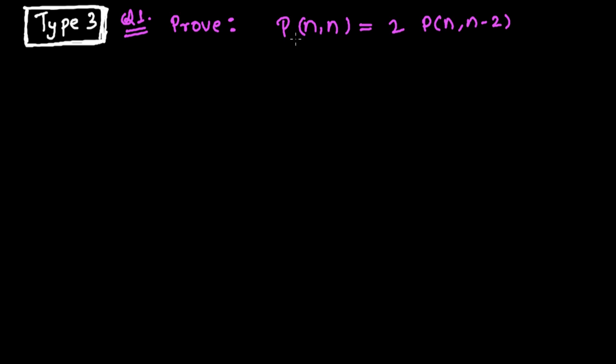So here the question is to prove P(n,n), permutation of n objects taken n at a time, equals two times permutation of n objects taken n minus two at a time.